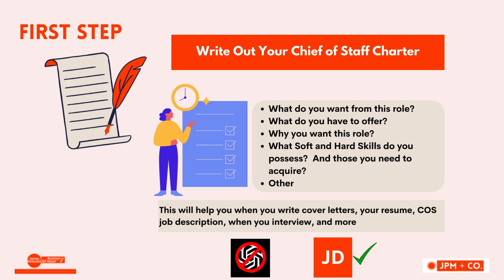First step: write out your Chief of Staff charter. Think about exactly what you want, because it's going to be harder to get what you want without verbalizing it, without having some sort of plan and strategy and being able to speak to that. When you write things down, you can really visualize what this job is. This helps you talk to your manager in a way that will help you get to that role, and ensures you've really thought about these thought starters and can deliver a crisp message about your knowledge of the Chief of Staff role.